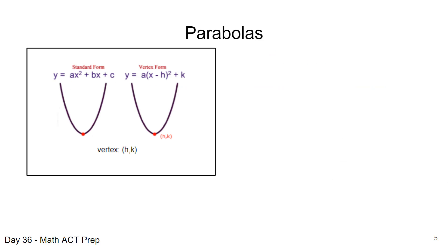First, let's talk about parabolas. We have a standard form and a vertex form of a parabola. The parabola is a curve with vertex h and k, and we can read that vertex directly from the equation if we're given it in vertex form. When a parabola opens up or down, the x term is squared and we have y equal to that.